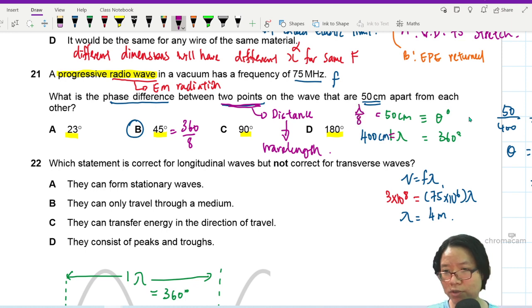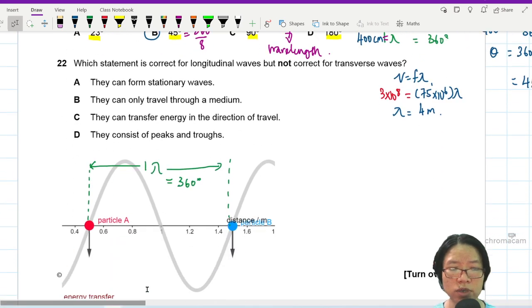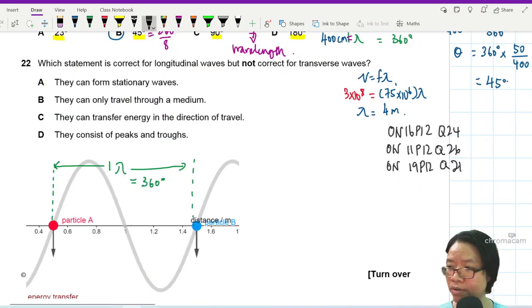So that's it for this question. Pretty straightforward one. If you need a bit of help, do more questions about phase angles. You can find them in your past year collections. These are some questions that you can try from different year and different variant. Seem to be pretty popular for variant two, but let's not take that as a pattern. So I've selected a few, go try them out. That's it for question 21.